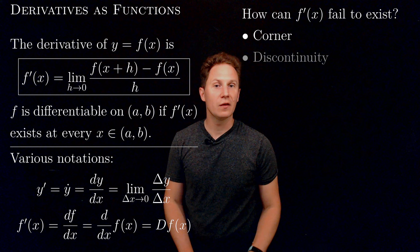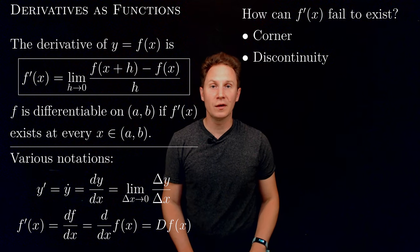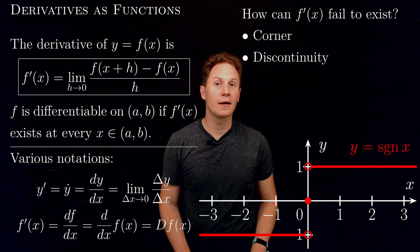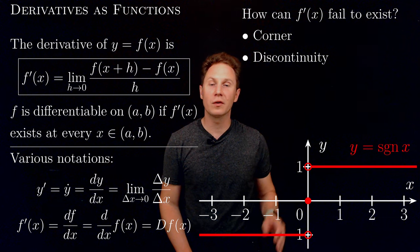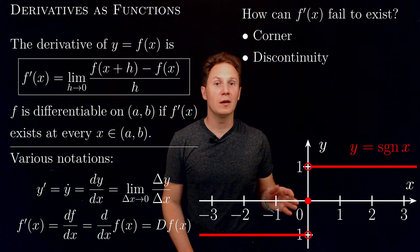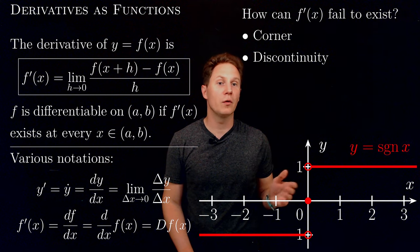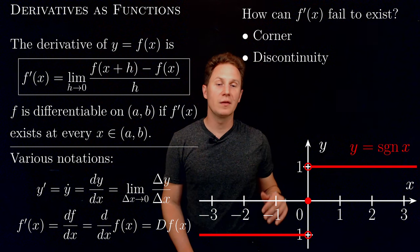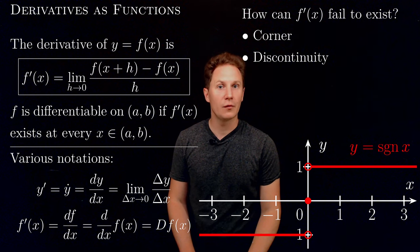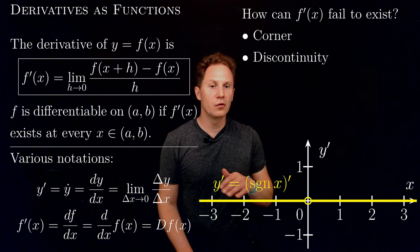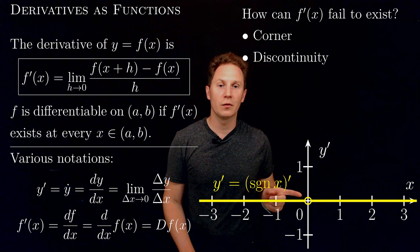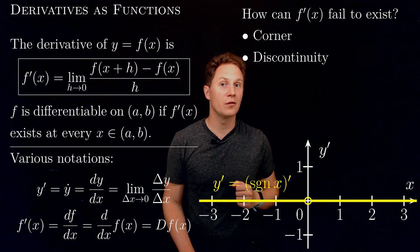Another way for the derivative to not exist is f being discontinuous at x. An example is the signum function: at x = 0 it has a jump discontinuity, therefore the signum function has no derivative at x = 0. Everywhere else the derivative is 0, so the graph of the derivative of the signum function looks almost like the constant 0 function, except at x = 0 where it is not defined.